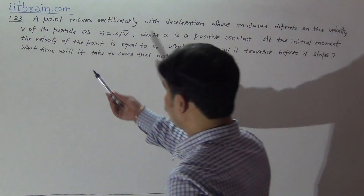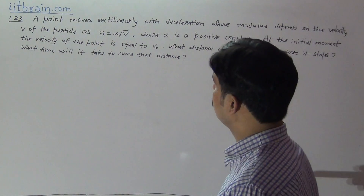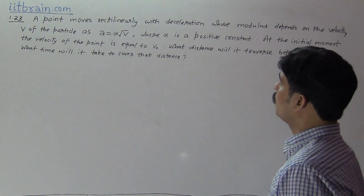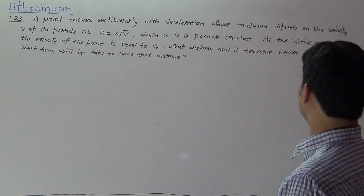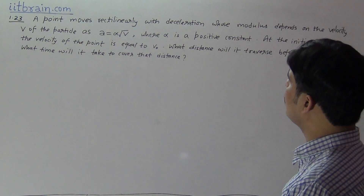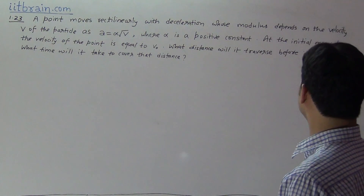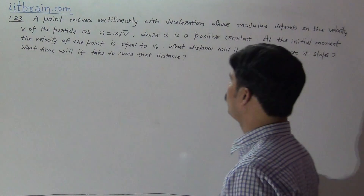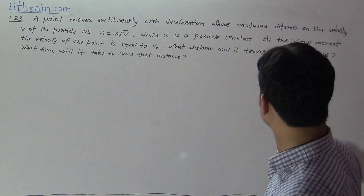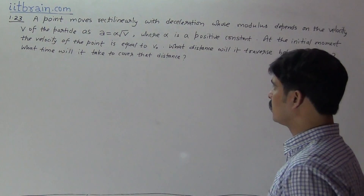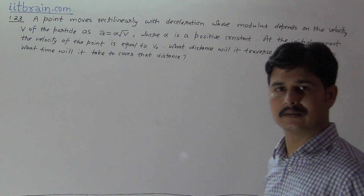Hello students, this is problem 1.23, Chapter 1, question number 23. A point moves rectilinearly with deceleration whose modulus depends on the velocity v of the particle as a equal to alpha root v, where alpha is a positive constant. At the initial moment the velocity of the point is equal to v₀. What distance will it traverse before it stops, and what time will it take to cover that much distance?